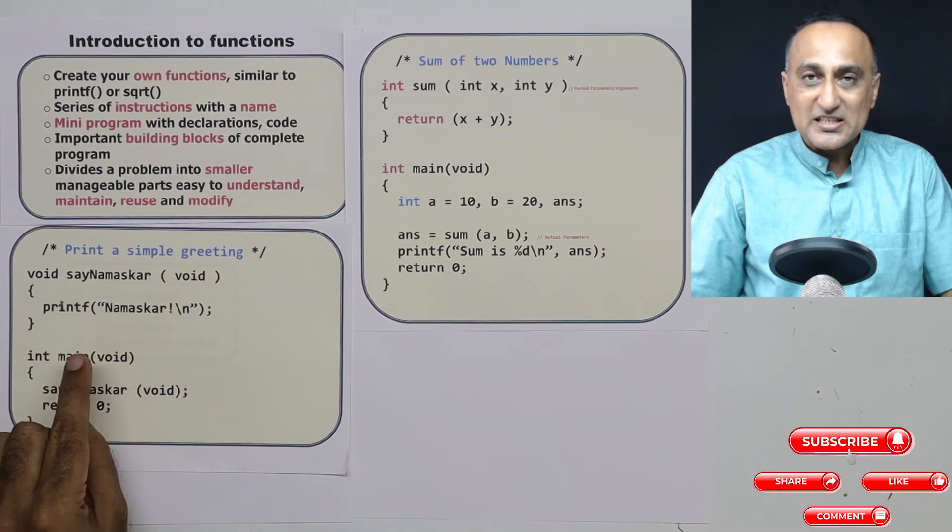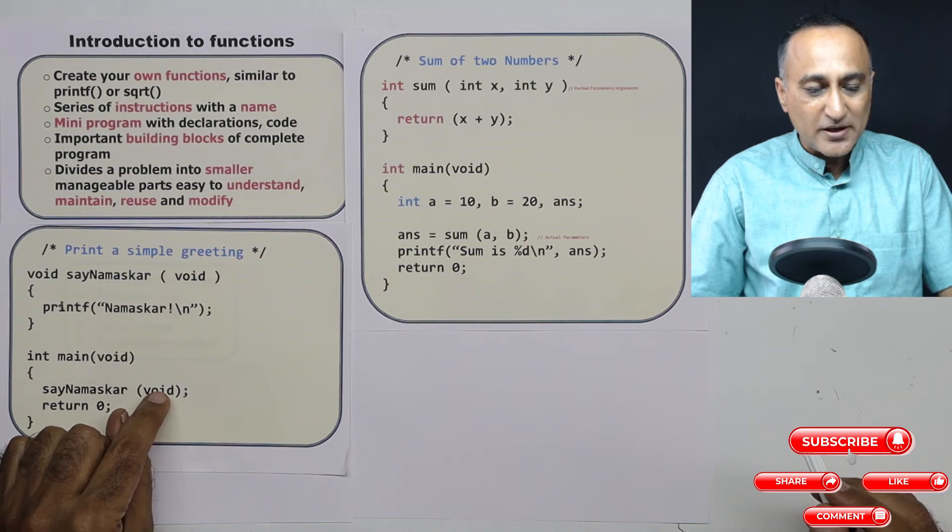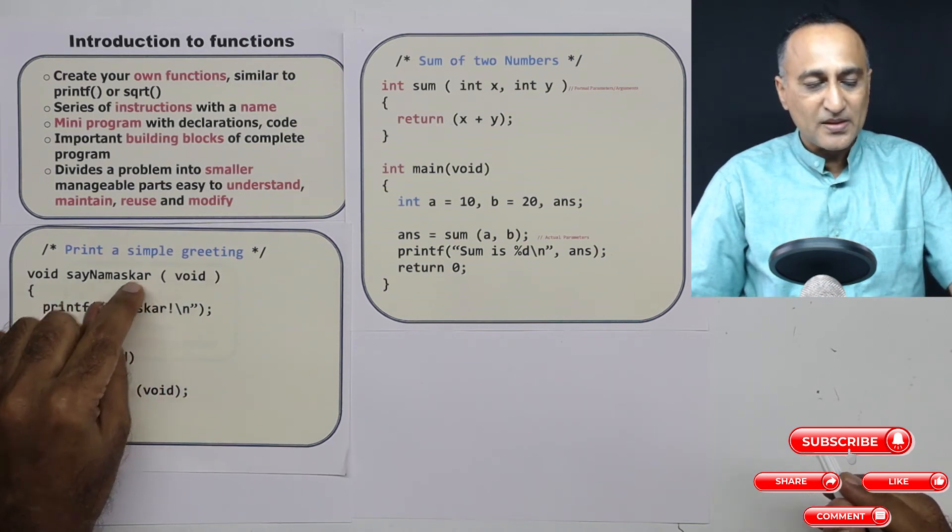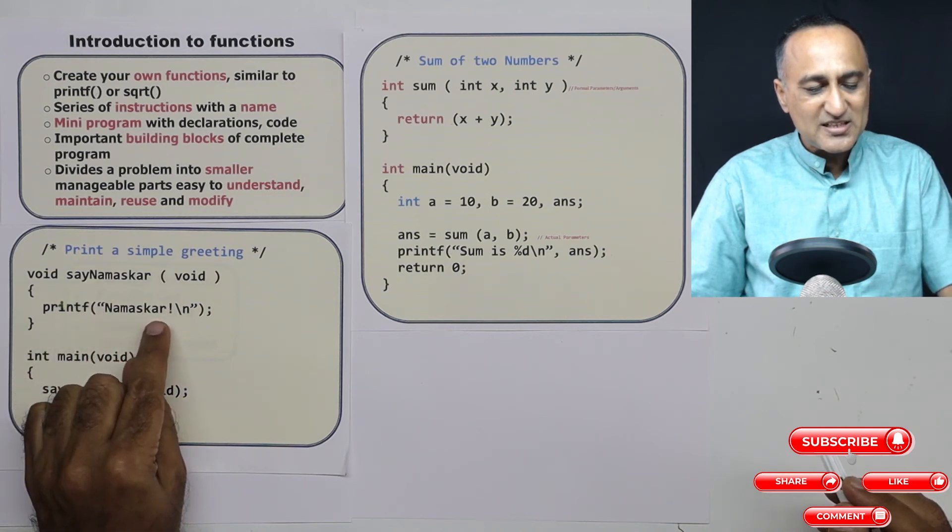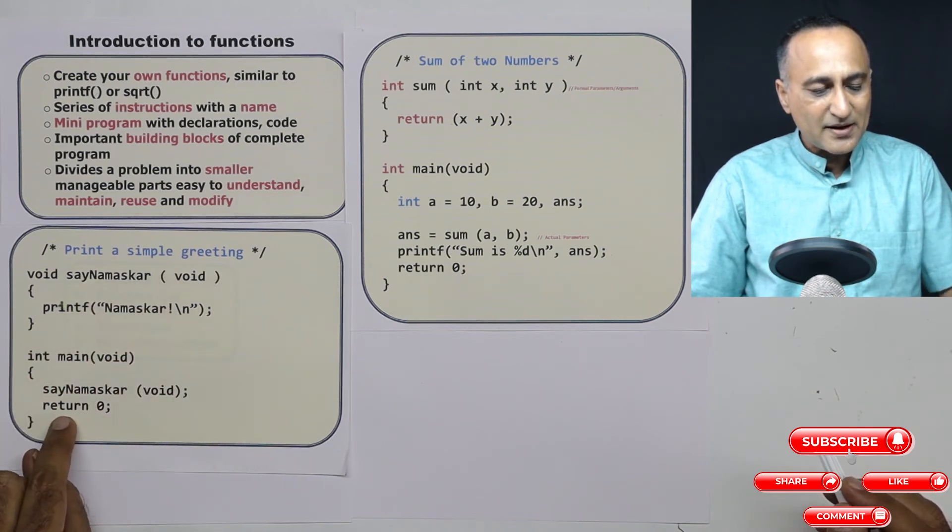This is not accepting any parameter, that means no data is being transferred from here to here. Then what is happening in sayNamaskar is I am simply printing the message namaskar and I am coming back to return.